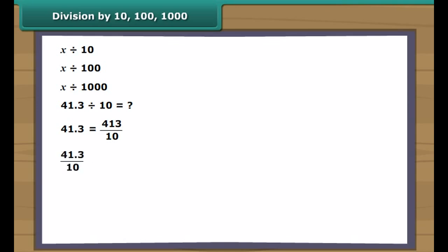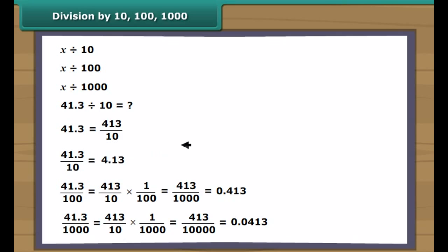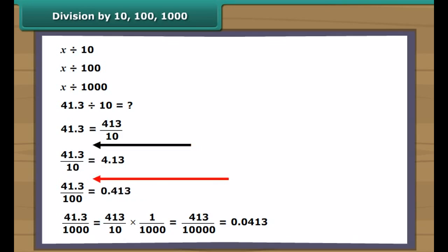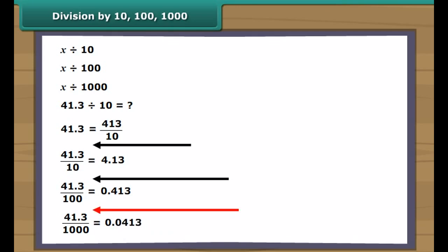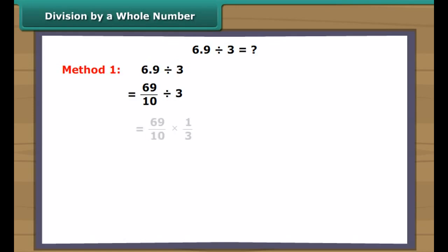Division by 10, 100, 1000: let us learn the division of decimal numbers by 10, 100, and 1000. For 41.3 divided by 10: we know 41.3 means 413÷10, so 41.3÷10 = 413/10 × 1/10 = 413/100 = 4.13. Similarly, dividing 41.3 by 100 and 1000 gives 0.413 and 0.0413 respectively. Thus, when a decimal number is divided by 10, 100, or 1000, the decimal point shifts to the left by 1, 2, and 3 places respectively.